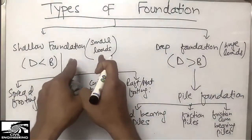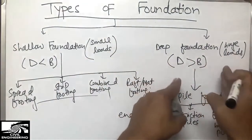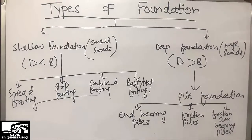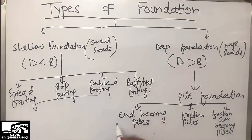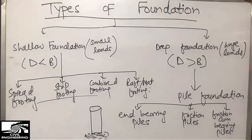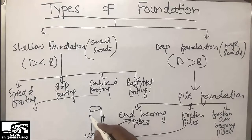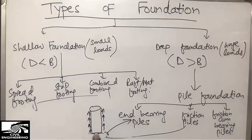Compared to shallow foundation which supports small loads, deep foundation supports heavy loads going deep below the ground surface. End-bearing piles are used where the soil strata below the pile is hard rock, so the pile bears on the hard stratum. In the case of friction piles, the strata below the pile is very soft or sandy, so the resistance is provided by the sides (skin) of the pile rather than the tip.